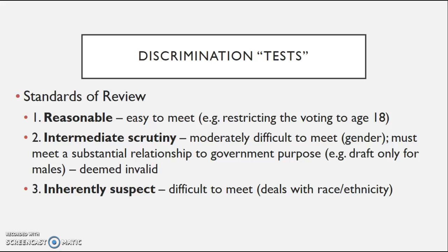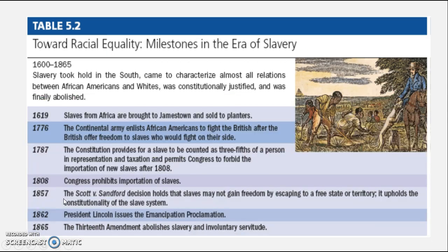The most difficult standard to meet when justifying discrimination is based on race, known as the inherently suspect test. This is very difficult to meet and deals with race or ethnicity — it is such a high hurdle that it's almost impossible for any government policy to justify racial discrimination. So in summary: reasonable based on age, intermediate scrutiny based on gender, and inherently suspect based on race.